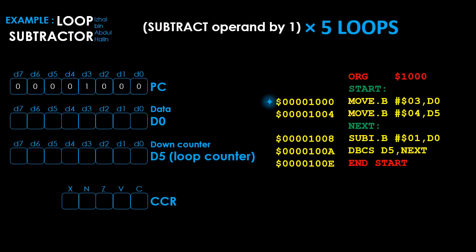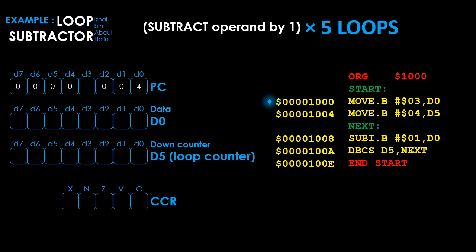Let's simulate the program. The program counter initially points to address 1000. Before executing, it is incremented to 1004. The instruction at address 1000 moves 3 into D0. The status register is updated to 000000. The PC now points to 1004. Before executing, it increments. The instruction moves 4 into D5. The status register is updated to 0000000. At this point, we expect the program to branch 5 times because our DBCS counter is 4.